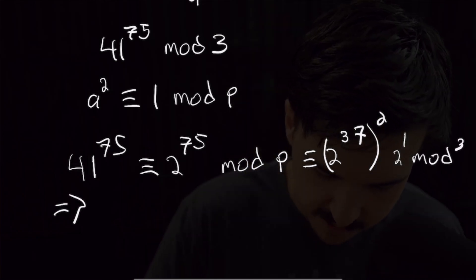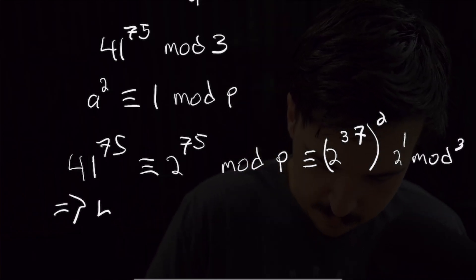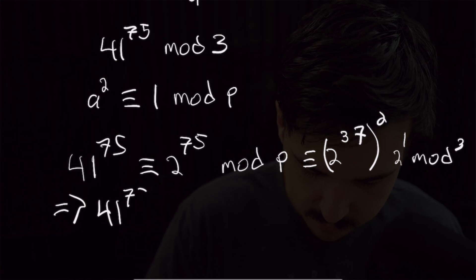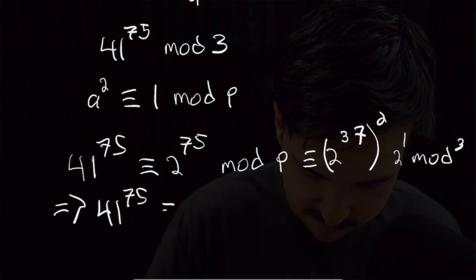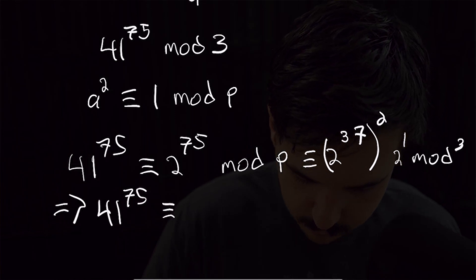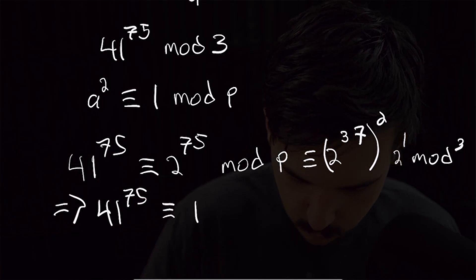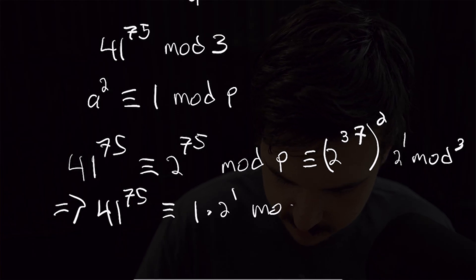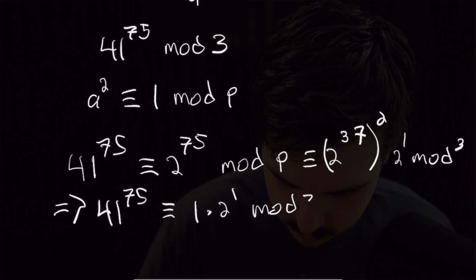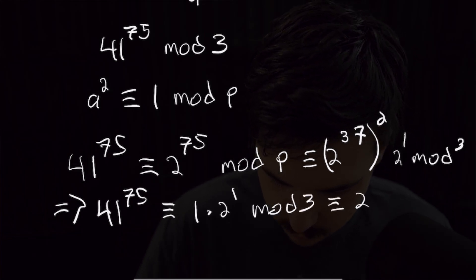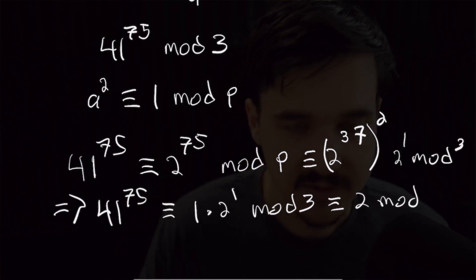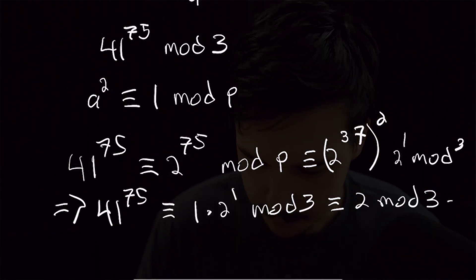And that brings us to our final answer. So we have 41 to the 75 is congruent to 1 times 2 to the first mod 3, which is congruent to 2 mod 3. So let's get into the next example.